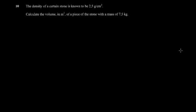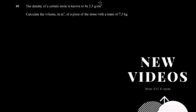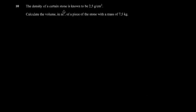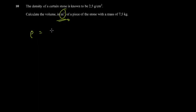The next part gives you the density of a stone and asks you to calculate the volume in cubic meters of a piece of stone with mass 7.5 kg. There's a lot of unit conversion required. One approach is to get the answer in cubic centimeters and convert, or convert the density units first to get the answer directly in cubic meters.